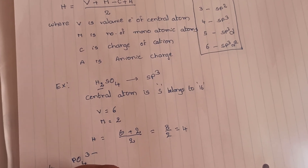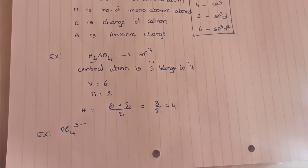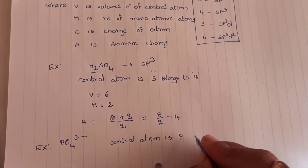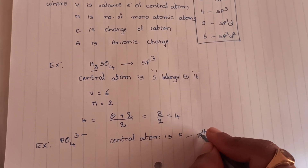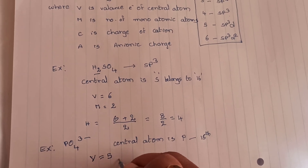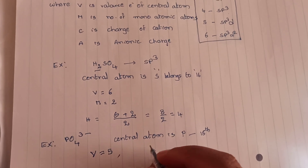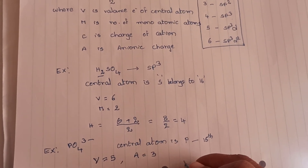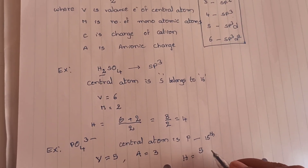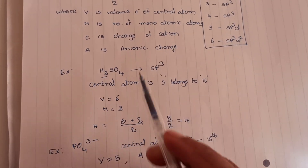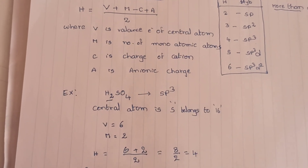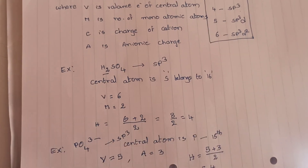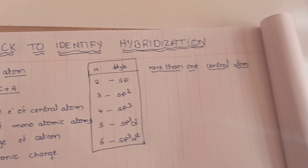One more example: PO₄³⁻. The central atom is phosphorus, which is in the 15th group, so V equals 5. There are no monoatomic atoms, no cationic charge, but there is an anionic charge of 3. So hybridization number equals 5 plus 3 divided by 2, equals 4 — SP3 hybridization.